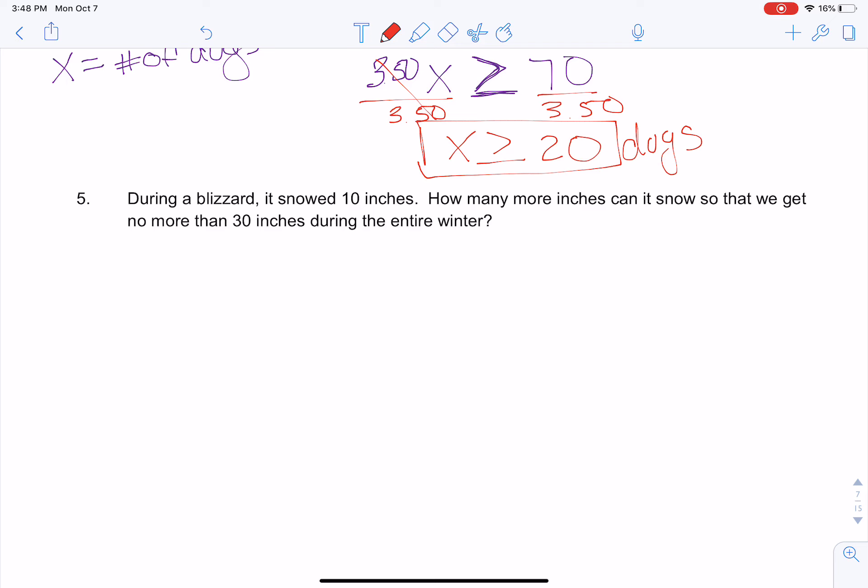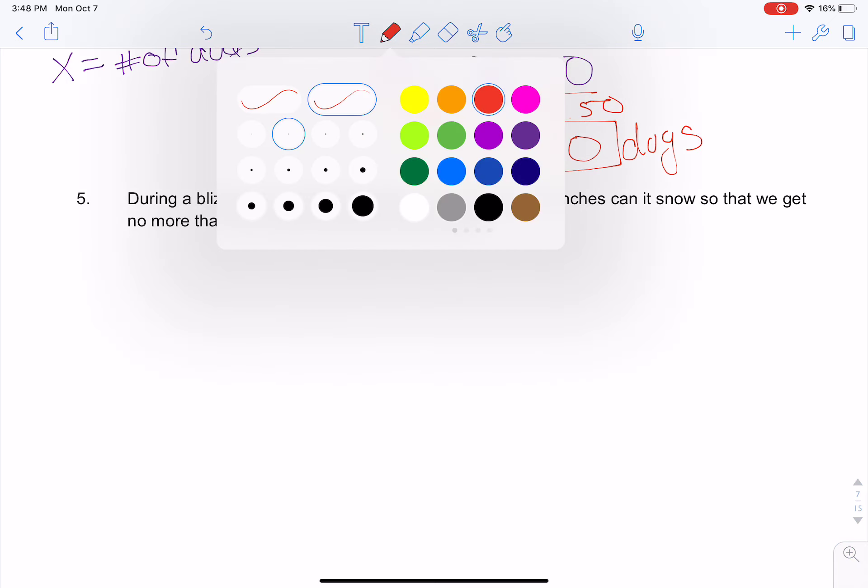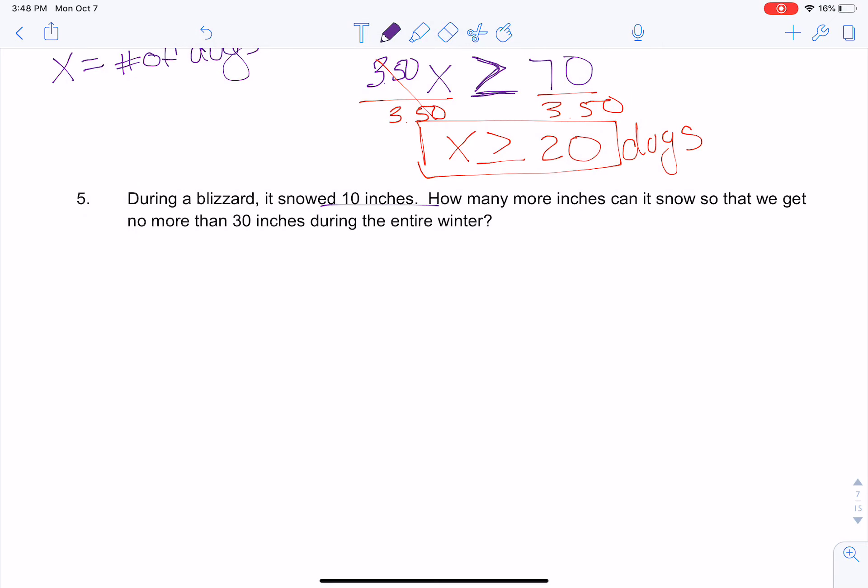Okay, let's try one more together. During a blizzard, it snowed 10 inches. That's insane. Okay, 10 inches. How many more inches can it snow so that we get no more than 30 inches? So again, I'm going to define my variable. X is going to stand for the number of inches of snow. Okay, so I have X. It snowed 10 inches. So it's already snowed 10 inches. So I need to know how many inches plus 10 that I've already gotten to get no more than 30 inches. So remember, no more than means less than that or equal to 30 inches.